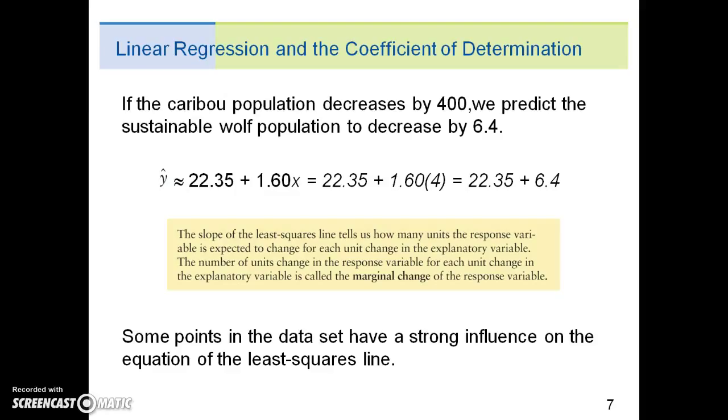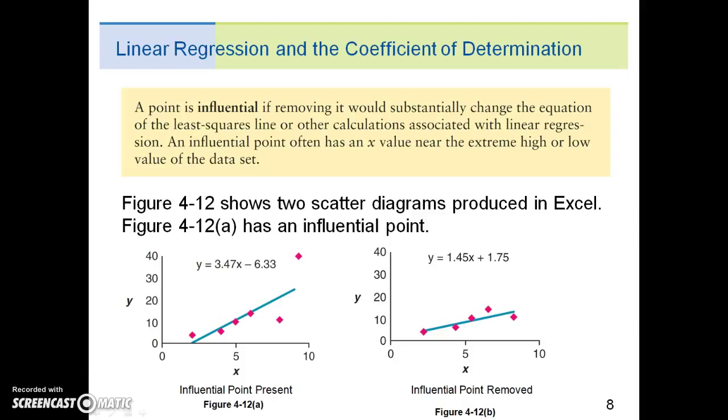Some points in the dataset have a strong influence on the equation of the least-squared line. A point is influential if removing it would substantially change the equation of the least-squared line, or other calculations associated with linear regression. An influential point often has an x-value near the extreme high or low value of the dataset.